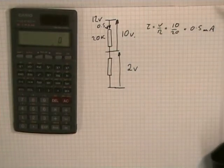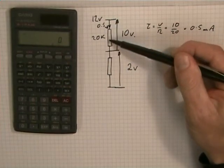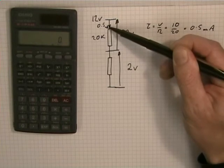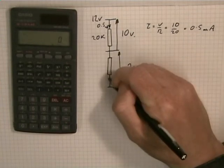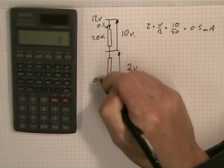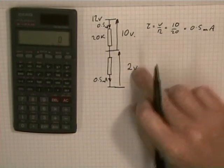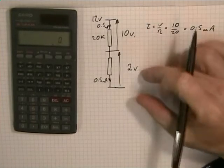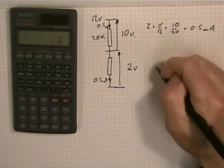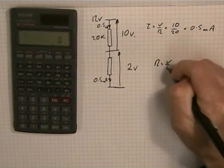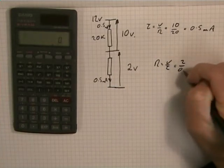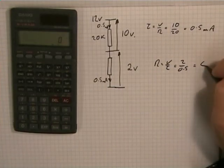There's only one path for the current to take, so all the current must flow down through here. So it's half a milliamp up there, it must be half a milliamp down here. We now know two things down here, we know the voltage and the current. Between these two points, we know the voltage and the current. So R equals V upon I, equals 2 over 1 half, equals 4k.